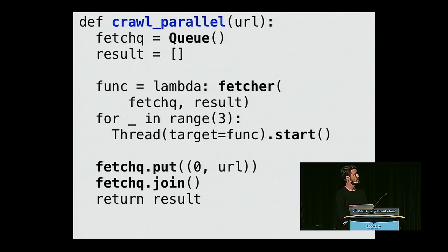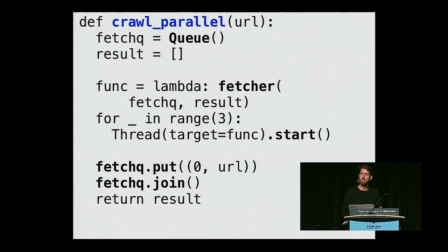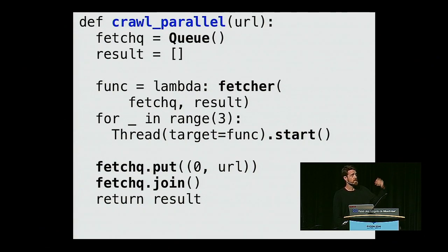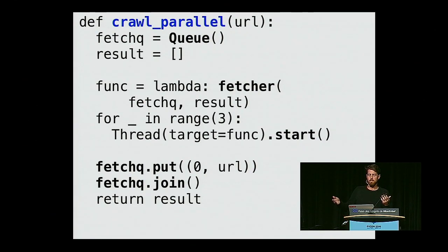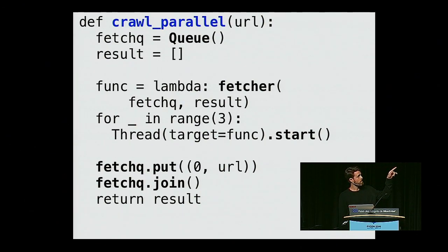We have this function called crawl_parallel. If you just look at it, this has nothing to do with crawling — it's just a bunch of code to create objects and hook them together. What we're doing is creating a queue, which is a primitive that lets threads talk to each other. We have a fetcher function that's going to be our thread. We start three fetcher threads, put the first URL at the bottom of the pyramid into the queue, and then wait for the queue to empty with fetch_queue.join(). We pass results via a closure into a lambda, which is gross but how most people do this.